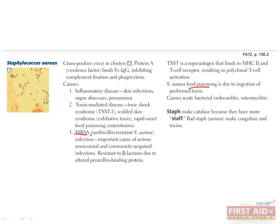You will encounter MRSA — methicillin-resistant staph aureus — with increasing frequency in your medical career, both in the community and in the hospital. When you suspect staph aureus in a skin or wound infection, it is safer to assume and treat the infection with an antibiotic against MRSA while you wait for culture and susceptibility results to return. TMP-SMX, vancomycin, and clindamycin are commonly used antibiotics against MRSA.